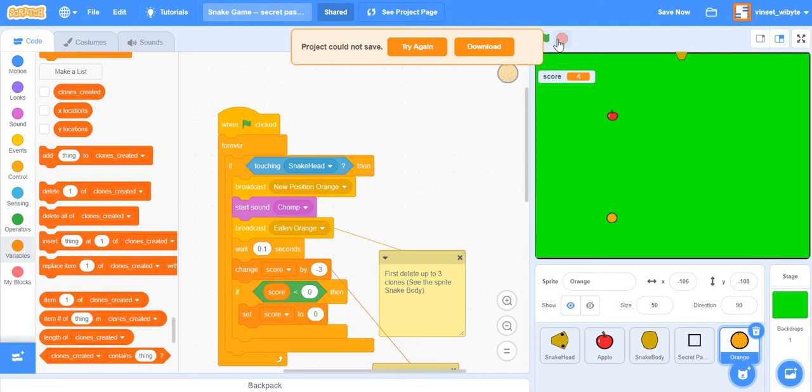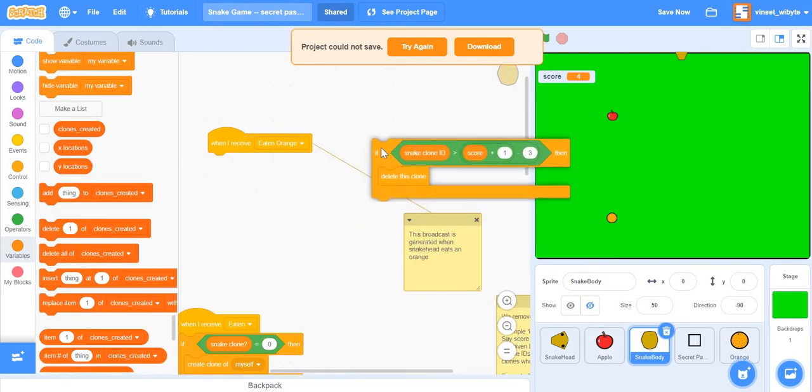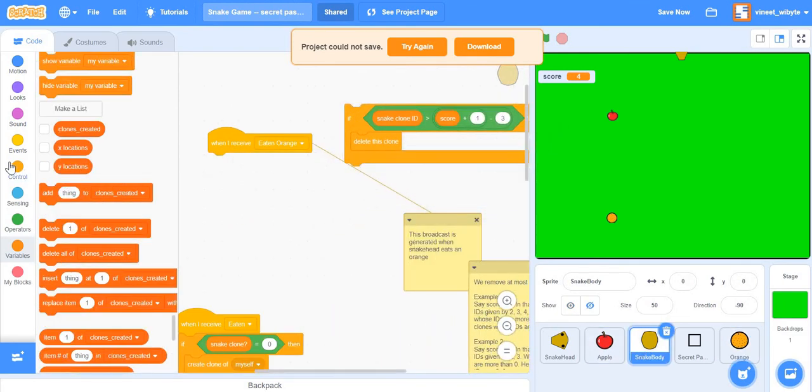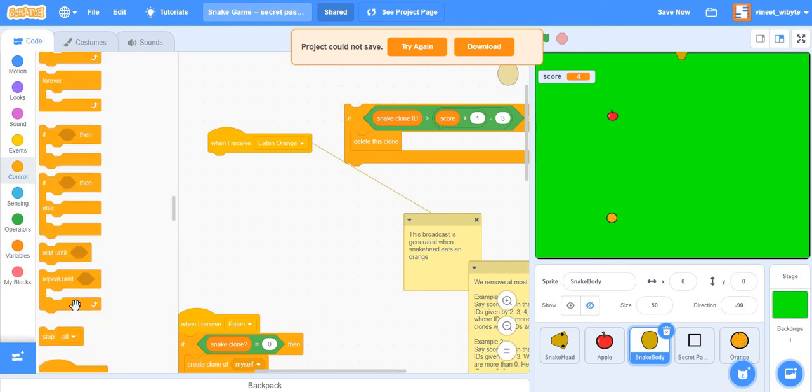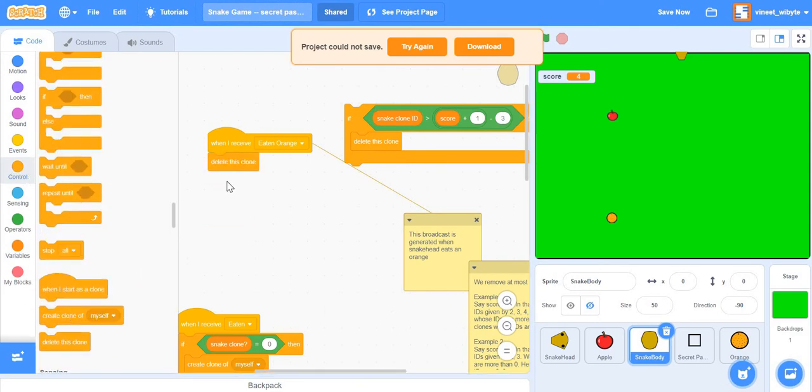The first thing I want to highlight is that this is not just a matter of deleting this clone. Now you might wonder, you might think that all I have to do is to say broadcast eaten orange, which is when what happens when orange touches the snake head, I say broadcast eaten orange, and I just go in the snake body clone, I just go and say when I receive eaten orange, say I put delete this clone. Now, this is not going to work, because remember, whenever broadcasting and cloning combine, so this broadcast message will be received by every clone out there. And hence, basically, what you will see happening is that all the tails will get deleted.